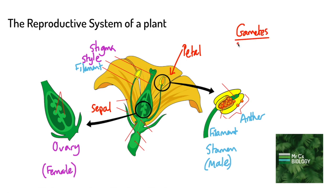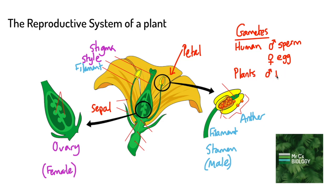Now we learn about gametes in a human. A gamete is a sex cell, and in a human we have male and female sex cells — the male sex cell is sperm and the female sex cell is an egg cell. In a plant we have slightly different gametes. The male gametes are pollen, and we can see some pollen grains here that are made in the anther and released from there. The female sex cell in a plant is an ovule, produced in the ovary.